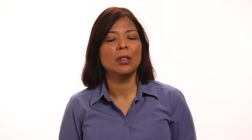So what is the Juniper Networks Internet edge solution? Juniper Networks provides a simplified Internet edge solution. The key components of this solution are high-performance routing, multi-layer security, and content caching.